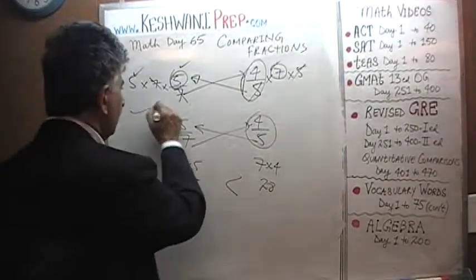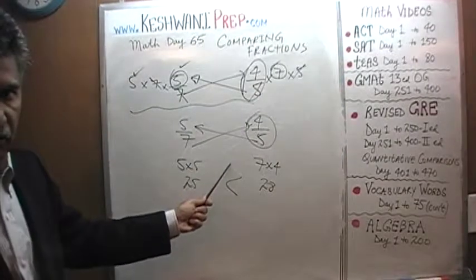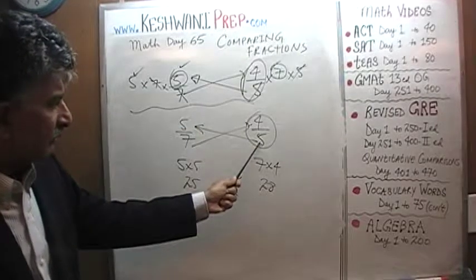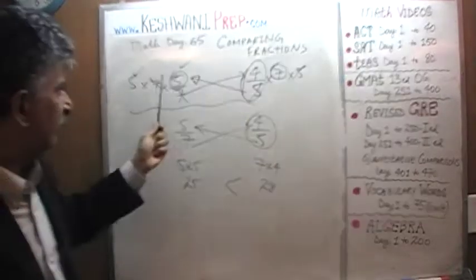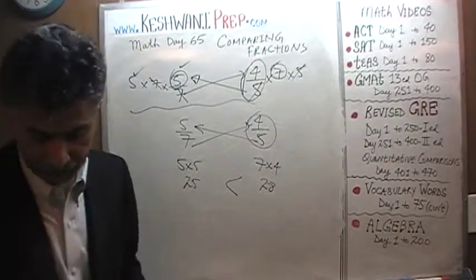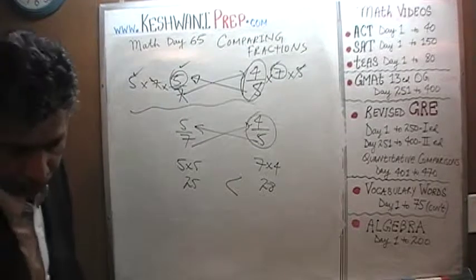But what's going on behind the scene in this world is what you see here. We are getting rid of this 5 from the bottom by multiplying both of them by 5. We are getting rid of this 7 from the bottom by multiplying both fractions by 7. Just one more.